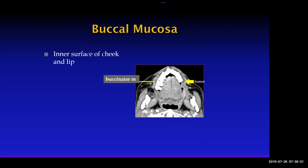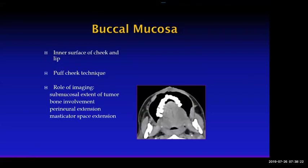Hopefully the surgeon will put the history on your request, so you know exactly what they're looking for — invasion of the bone, whether it's going up to the skin, or to the parotid. You can help yourself by having patients do a puff cheek technique: inflate the cheeks and image during the puff cheek maneuver. That's when you can nicely see the submucosal extent of the tumor — and here you can clearly see thickening of the buccal mucosa on the left. Also look for adjacent bone involvement, perineural extension, or extension into the masticator space, which makes it a higher-grade tumor.